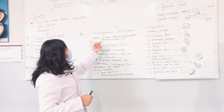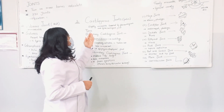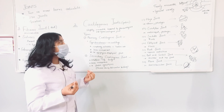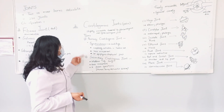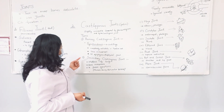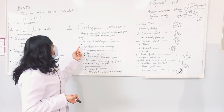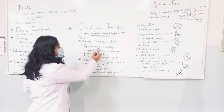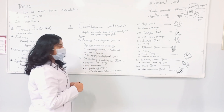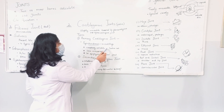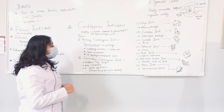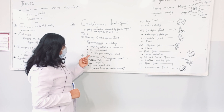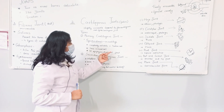Cartilaginous joints are slightly movable and are connected with fibrocartilage and hyaline cartilage. They have two types: primary cartilage and secondary cartilage. The primary type is synchondrosis, which completely articulates with hyaline cartilage and has less movement. An example is the epiphysis and diaphyseal joint.